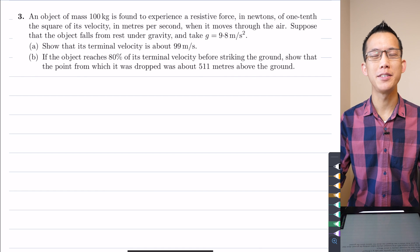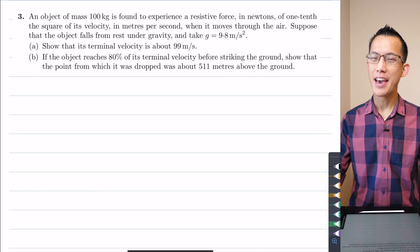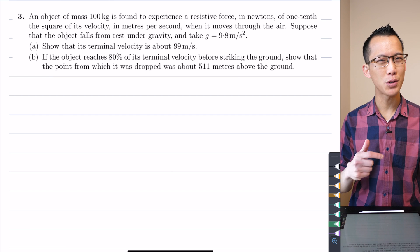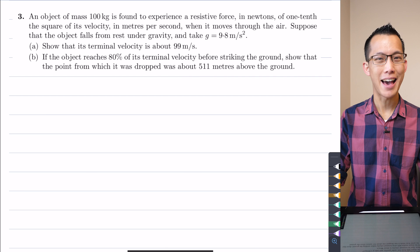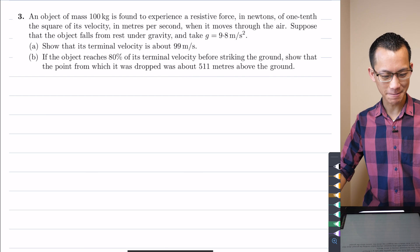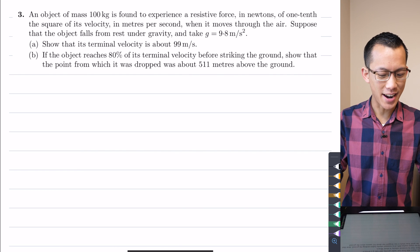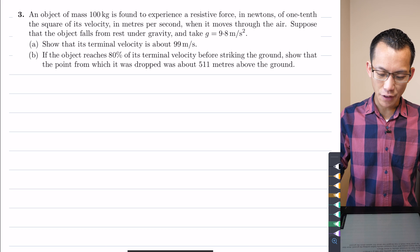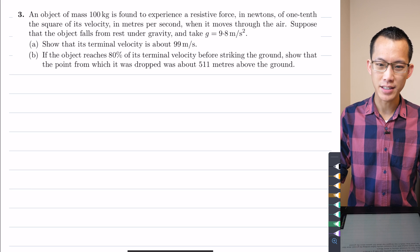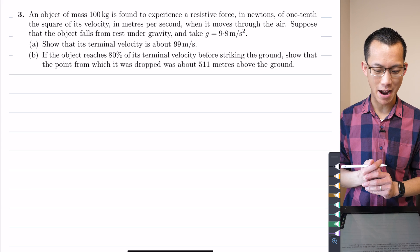We're going to take a look at this vertical resisted motion question together because it has a couple of cool little things that I want you to take notice of which are different from vertical resisted motion questions we've looked at in the past. So let's read it together. An object of mass 100 kilograms is found to experience a resistive force in newtons of one-tenth of the square of its velocity.